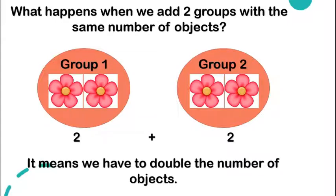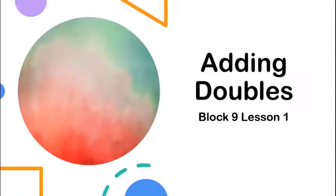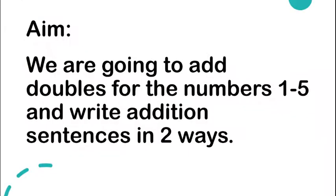When we add two groups with the same number of objects, it means we have to double the number of objects. So today we will learn about adding doubles. We are going to add doubles for the numbers one to five and write addition sentences in two ways.